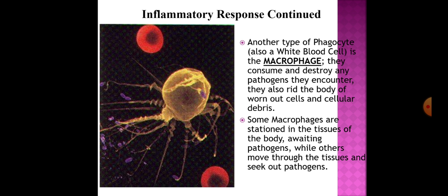Another type of phagocyte is the macrophage. They consume and destroy any pathogens they encounter, and also rid the body of worn-out cells and cellular debris. Some macrophages are stationed in the tissues of the body waiting for pathogens, while others move through the tissues seeking out pathogens.